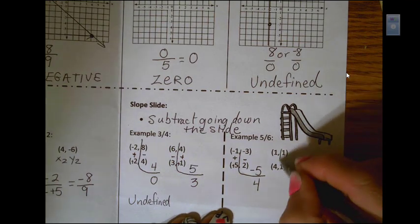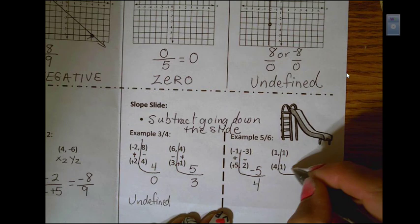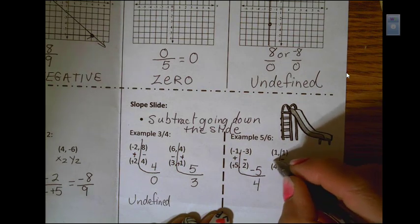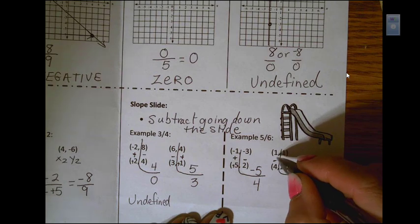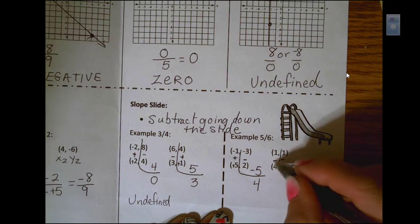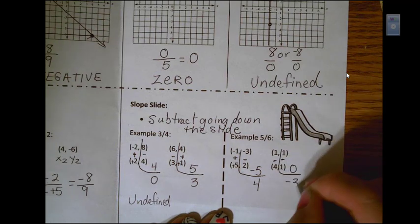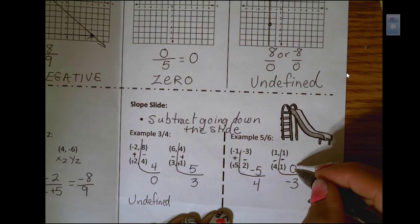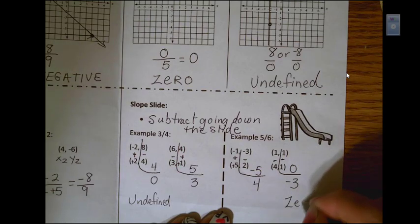Last example. 1 minus 1 would be 0. 1 minus 4. So you've got to think they're opposite signs. So I'm actually going to subtract them. And I've got more negative. Because I have a 0 in the numerator, that slope would be 0. That would be a horizontal line.